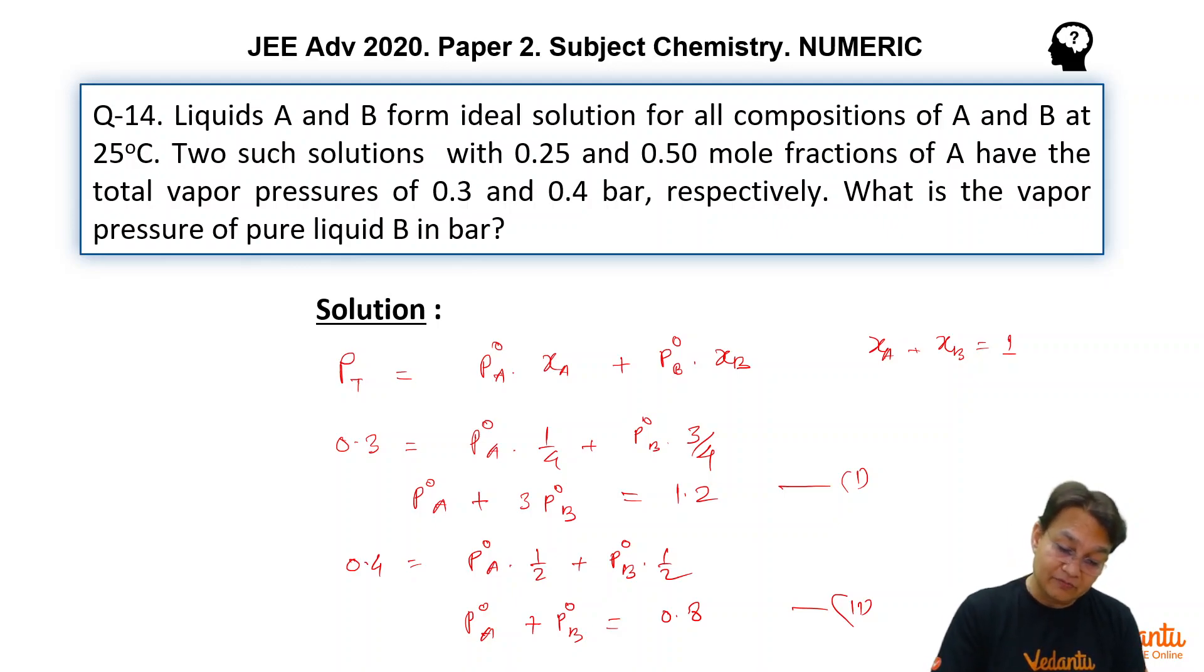So if you solve equation 1 and equation 2, by subtracting 2 from 1, we can simply see that 2p⁰B equals 0.4, which gives you p⁰B equals 0.2 bar.